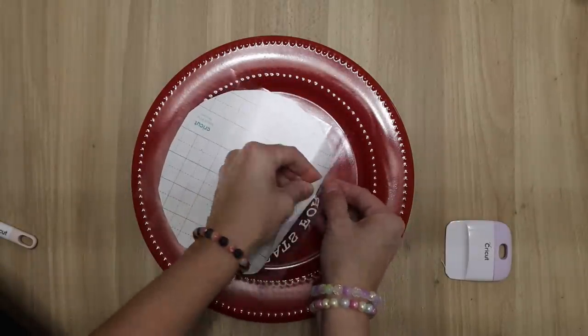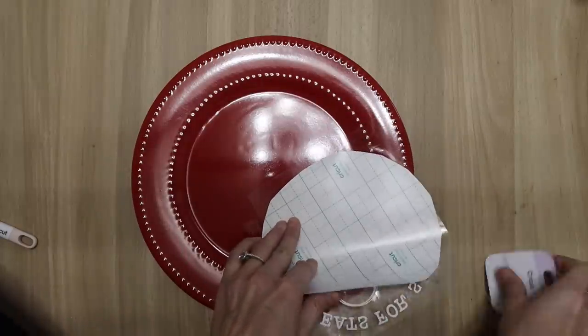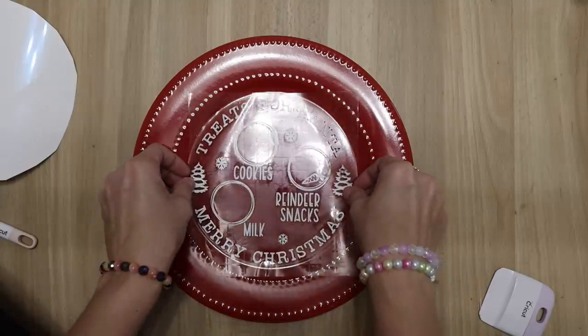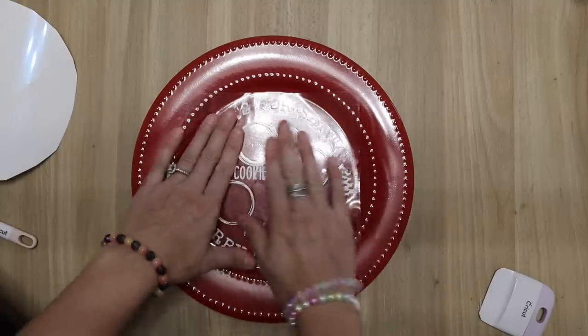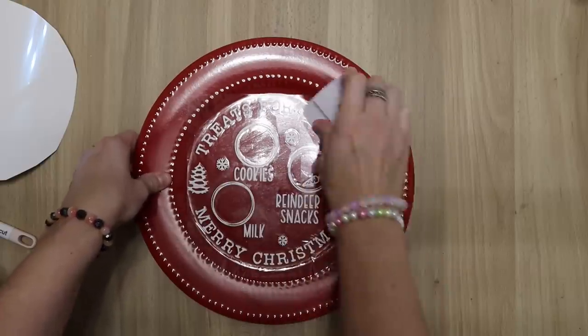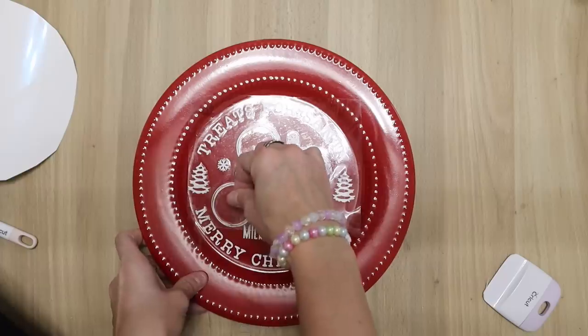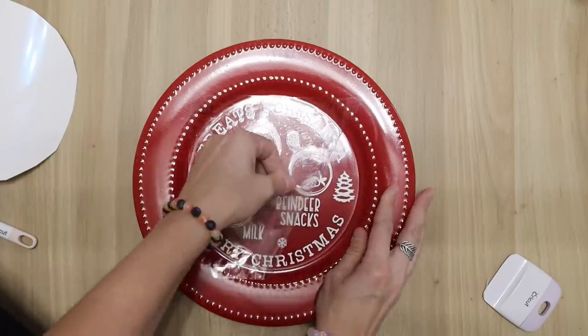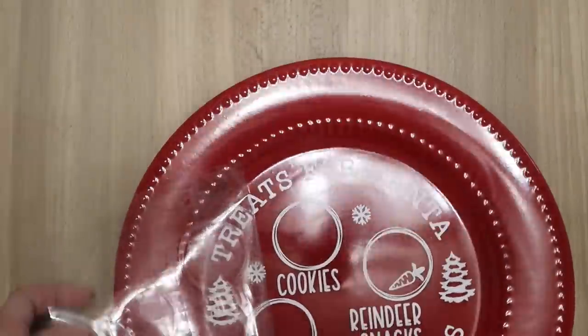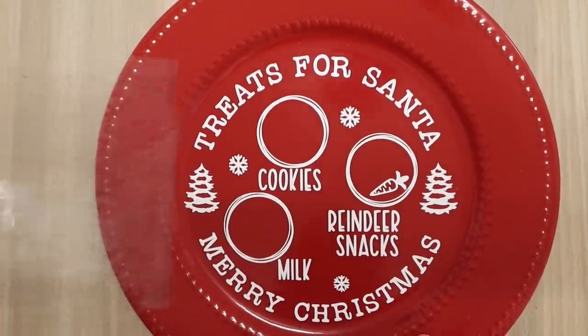I just grabbed a vinyl decal off of the Cricut Design Space. I did not make it. I just typed in Santa cookies and browsed the site. I grabbed this red plate that is available at the Dollar Tree and I'm just setting this in the center. It says treats for Santa, cookies, reindeer, milk. I think this is more of a decoration but if you want to throw some food on here I used permanent vinyl so I think that it will be good to go. I didn't seal anything. Permanent vinyl goes a long way. At least I've never really had issues with permanent vinyl. Let me know in the comments if you've ever had permanent vinyl actually not be permanent.